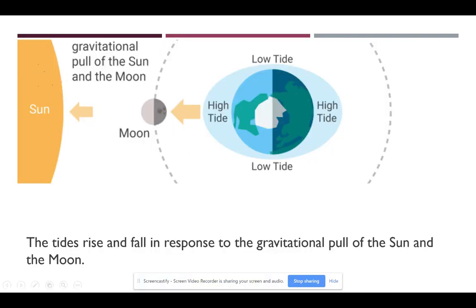Also, the high tides and low tides that we experience fall in response to the gravitational pull of the sun and the moon. So as the Earth rotates around the sun and the moon every 24 hours, we rotate between low tide to high tide, low tide to high tide.